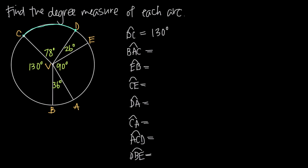When finding the degree measure of a major arc like arc BAC, instead of adding 36, 90, 26, and 78 degrees, we can take the degree measure outside that arc — in this case 130 degrees — and subtract it from 360 degrees, because all the way around the circle is 360 degrees. So for arc BAC, we do 360 minus 130 degrees, giving us 230 degrees. If we had added 36, 90, 26, and 78, we would get the same result. It's just simpler to do it this way.